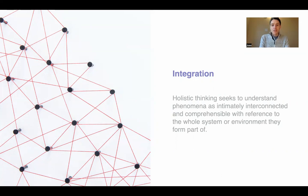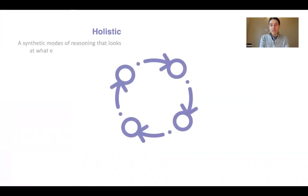Holistic thinking seeks to understand phenomena as intimately interconnected and comprehensible only with reference to the whole system or environment they form part of. So it's always looking upwards and outwards to see the bigger picture, the forest and not just the trees, or trying to understand the trees in relation to the overall forest. There have been many different traditions of holistic thinking over the centuries, and systems thinking is maybe just one iteration of that that emerged during the 20th century.